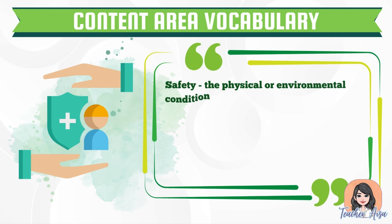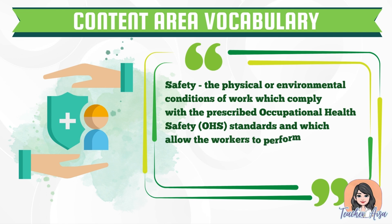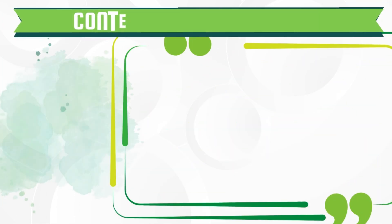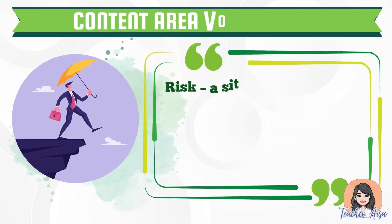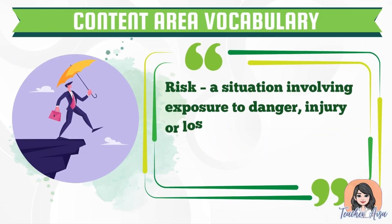Occupational safety — these are safe practices related to production and work processes in the workplace. Safety — the physical or environmental conditions of work which comply with prescribed occupational health and safety standards, allowing workers to perform their job without or with acceptable exposure to hazards. Risk — situations involving exposure to danger, injury, or loss.